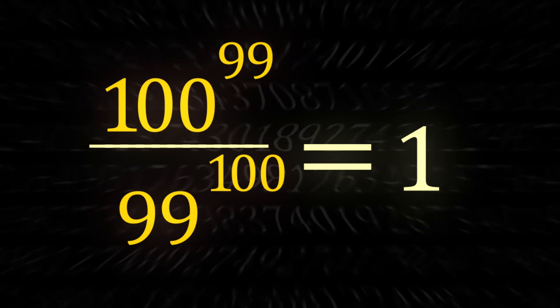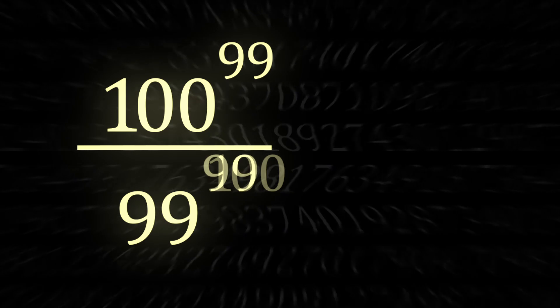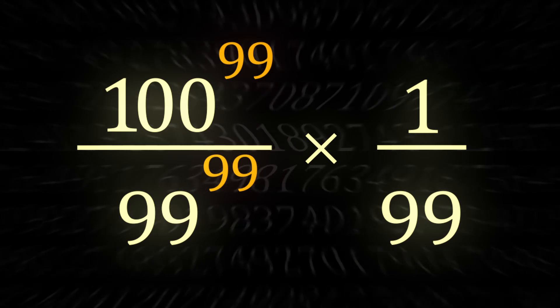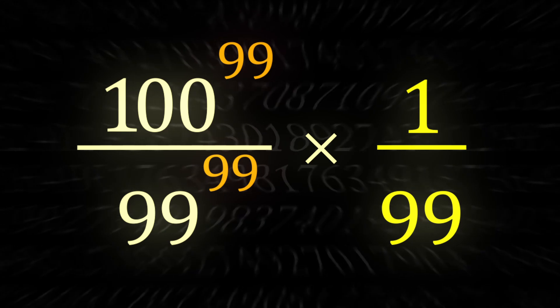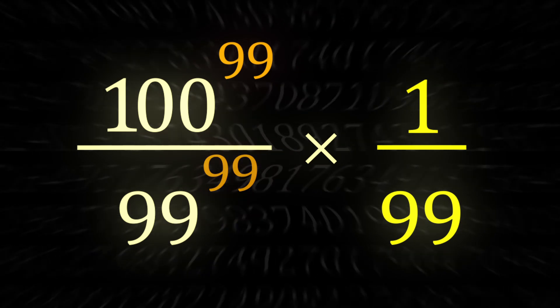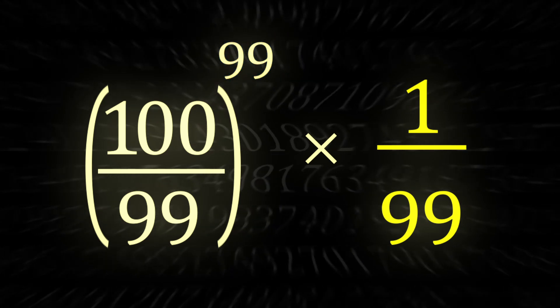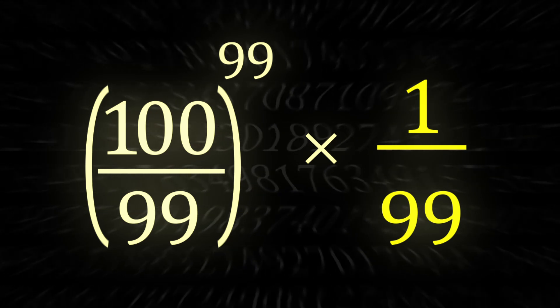This new way of thinking is appealing, though how do we continue? It only feels like we've created more questions. The first thing we could do is rewrite the ratio with equal powers on both the numerator and denominator. We can accomplish this by rewriting the extra 99 and separating it, then simplifying to the 99th power and moving the power outside. The ratio turns into a much easier-to-manage expression: 100 divided by 99, raised to the power of 99.